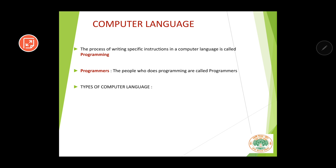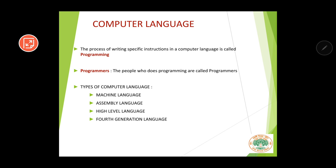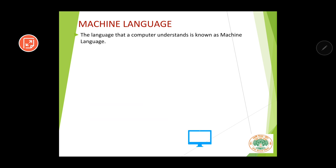Now let us go to the types of computer languages. What are the different types of computer languages? The different types are: number one, machine language; number two, assembly language; number three, high level language; and number four, fourth generation language. In today's session we will be discussing about machine language.